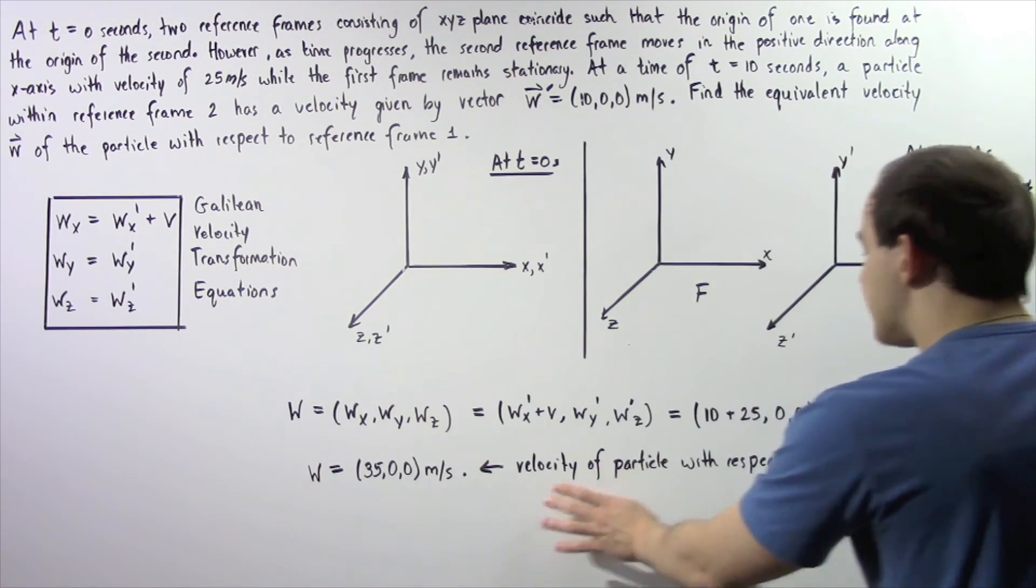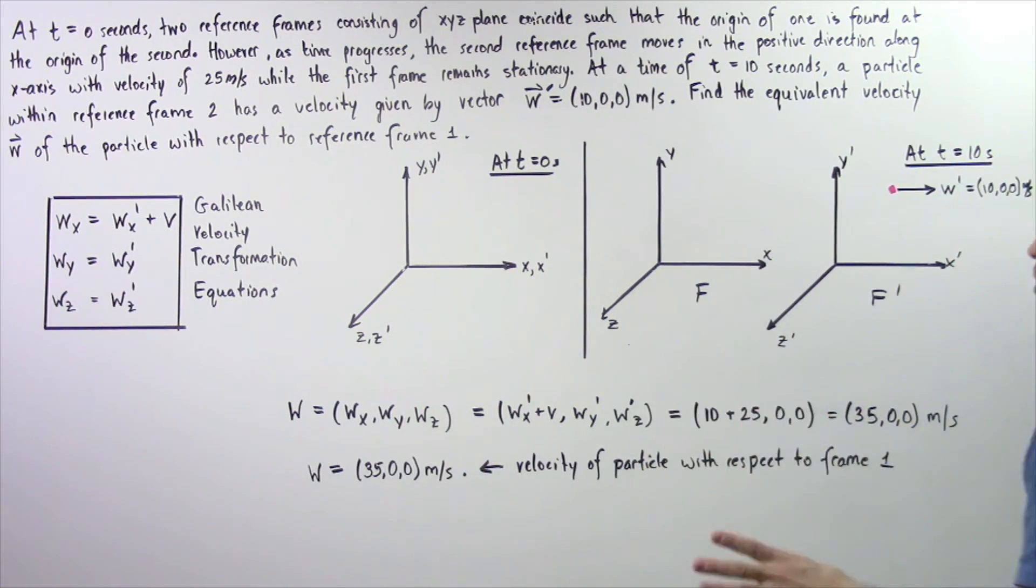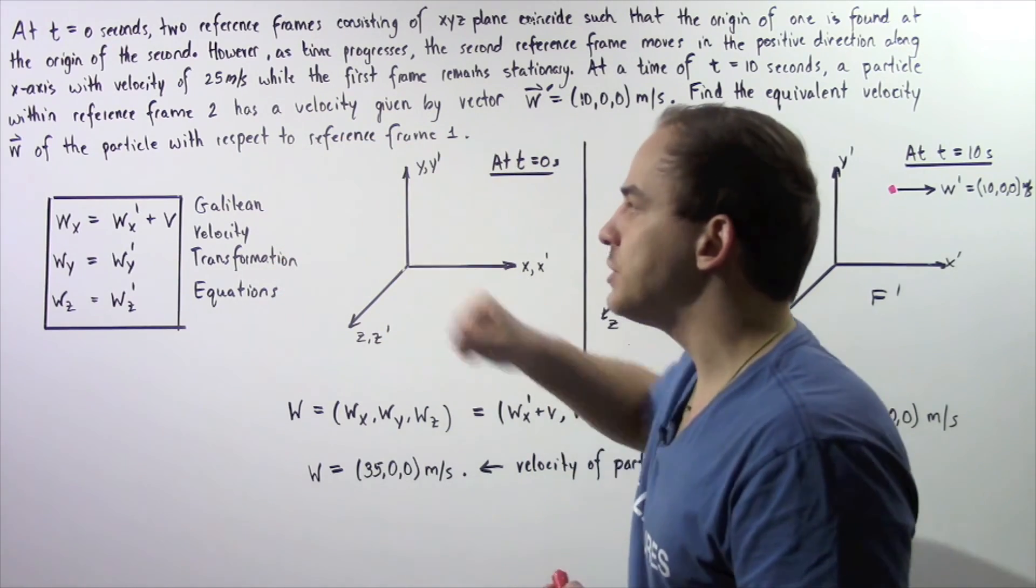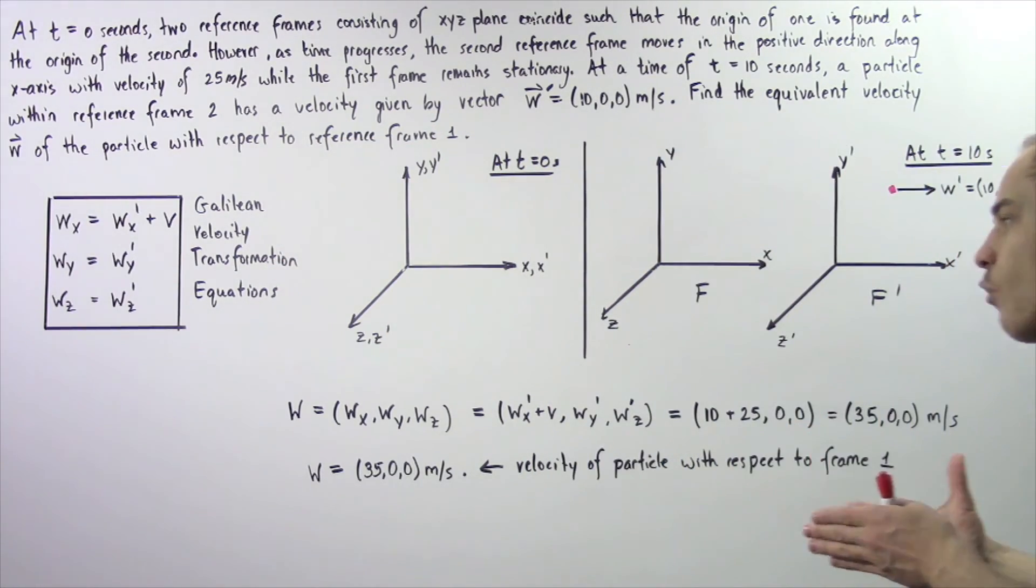So this gives us the velocity of the particle with respect to frame one. So basically, we were able to use the Galilean transformation equations to transform the velocity vector of this point from frame f prime to frame f.